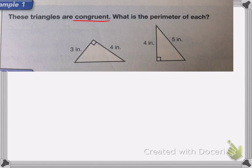If the two triangles are the same, then I know that this side and this side are equal and that this side and this side are equal and that this side and this side have to be the same.